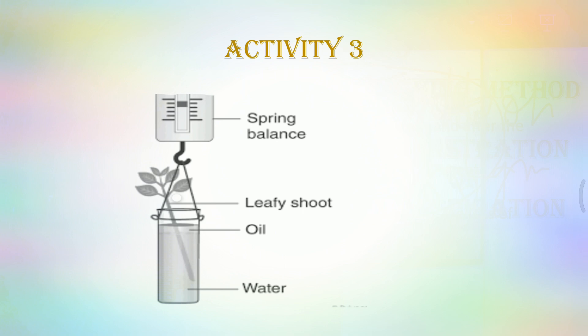So initially when we begin with the experimental setup we use a spring balance and we will again follow the reading over there. We will try to mark the reading that what was the initial reading and after two hours again we will check the reading and there will be difference between initial and final reading and that difference is the amount of transpiration which has occurred. So what is our basic aim?